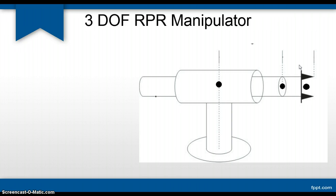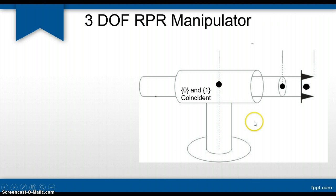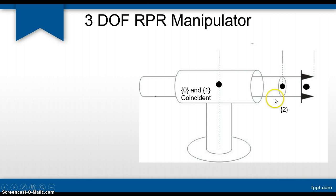Now let us begin by assigning joint axes and then the coordinate system. We will take the origin at the top of the link as the origin of joint 1 as well as the base coordinate system. Coordinate system 0, our reference frame, and joint 1 will be coincident at this location. Joint 2 indicates sliding of the horizontal arm, and joint 3 indicates the rotation of the tool.